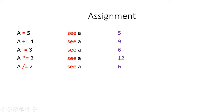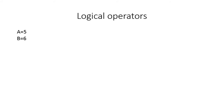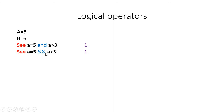For logical operators: 'and' requires both conditions to be true for a result of 1. For example, 'c (a=5) and (a>3)' — both are true so the result is 1. You can also use '&&' instead of 'and'. If one condition is false, such as 'a=b' when they differ, the result is 0.